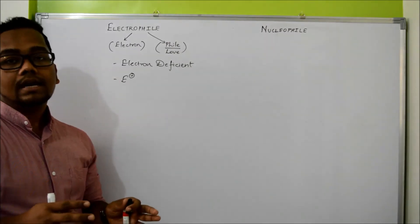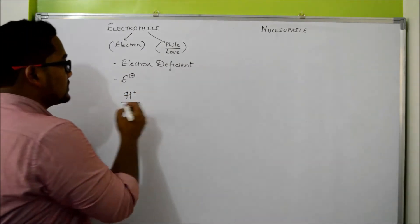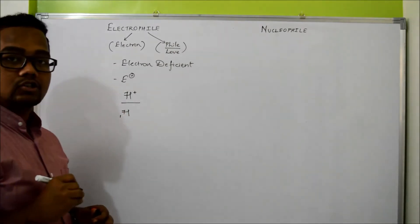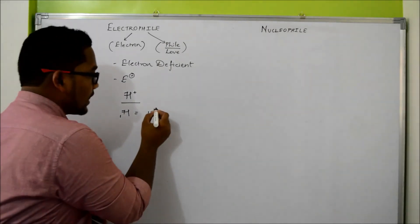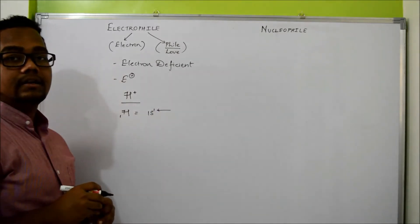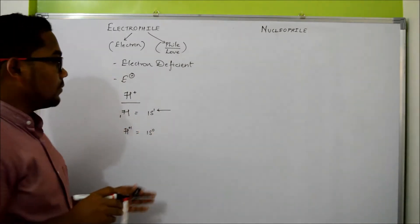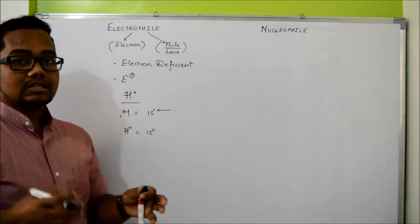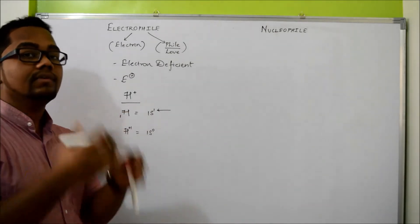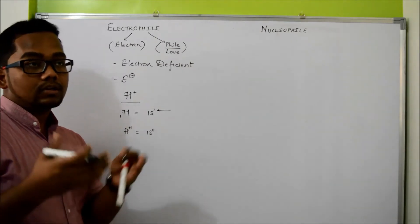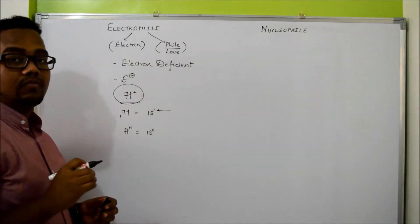It is not necessary that the atom or molecule should have a positive charge for us to call it an Electrophile. Even neutral atoms are also electron-deficient. Let's take the example of H+, that is a proton. The atomic number for Hydrogen is 1 and its electron configuration is 1s1. When you have H+, the Hydrogen atom loses its one electron, so H+ has the configuration 1s0 — that means there is not a single electron with this H+ ion. So this Hydrogen atom will always be in search of an electron, making it electron-deficient. I'll call H+ an Electrophile — it is an electron-loving species.